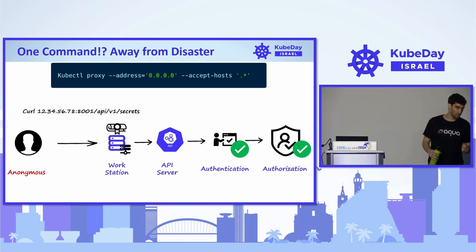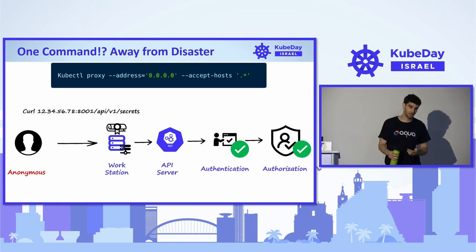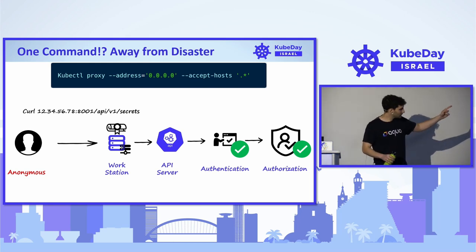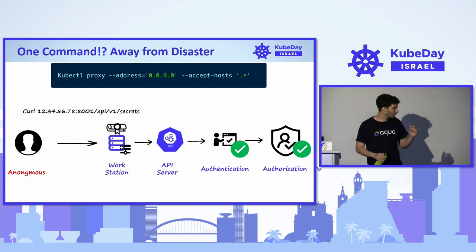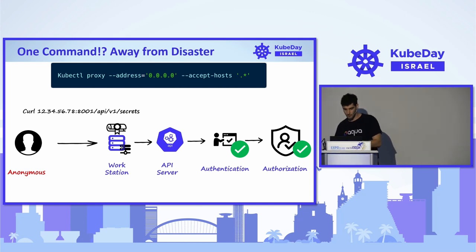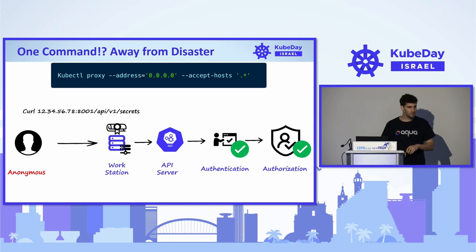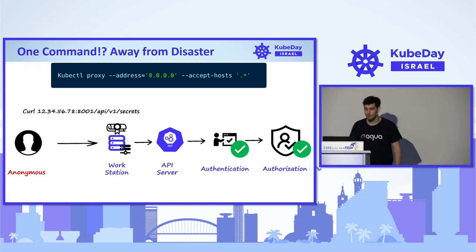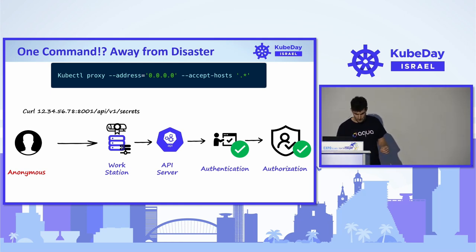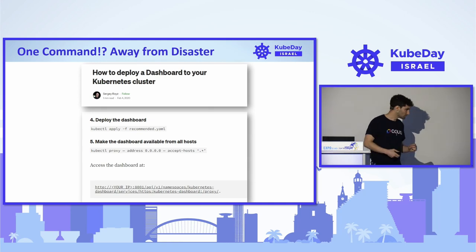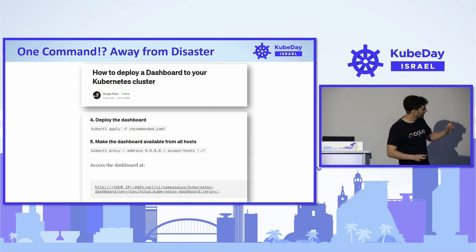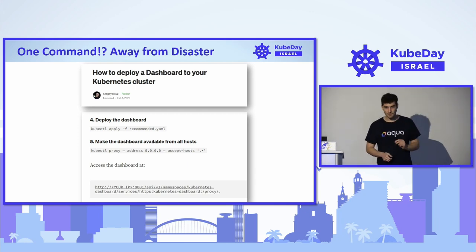For example, if a developer is working on a large private network or an EC2 with an exposed IP address, everyone who can reach that workstation will be automatically forwarded on port 8001 to the API server — gaining the permissions of that developer. If the developer is a cluster admin, so is the attacker. This is hard to control because you can't manage everything developers do on their workstations. There are even blogs that explain how to run this command to deploy the Kubernetes dashboard, without realizing they're exposing their whole cluster.